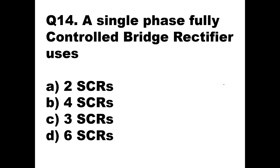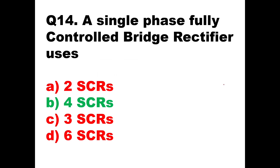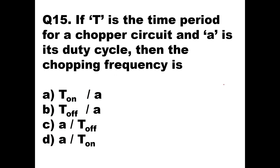Question number fourteen: a single-phase fully controlled bridge rectifier uses how many SCRs? In a fully controlled bridge rectifier, both the incoming path and the returning path must have SCRs. There are two SCRs for the positive path and two for the negative path, giving four SCRs total — T1, T2, T3, T4. So the answer is four SCRs.